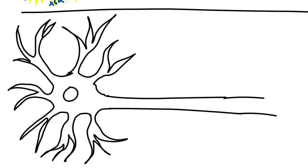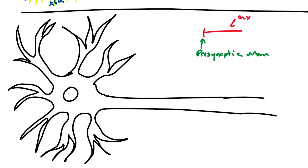What we're interested in is the connections being made to the soma and the dendrites. To each neuron, there could be a thousand other neurons making synaptic connections to the soma and the dendrites. The way I'm going to draw these synaptic connections is like this, where this part right here is the presynaptic membrane, and this is the axon of that neuron making that connection.